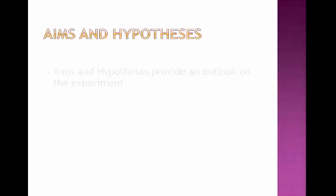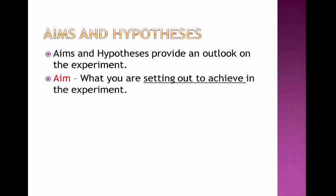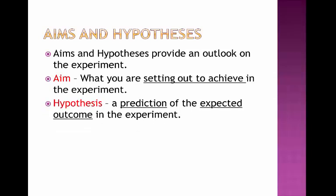Aims and Hypotheses provide an outlook onto the experiment a psychologist is ready to conduct. Students do get them confused sometimes, but they can be distinguished quite easily. An aim is what you are setting out to achieve in the experiment. That differs from the hypothesis, as the hypothesis is a prediction of the expected outcome of the experiment.